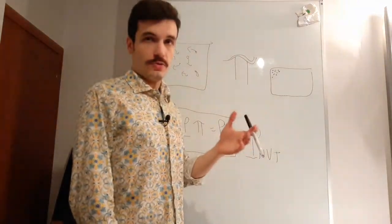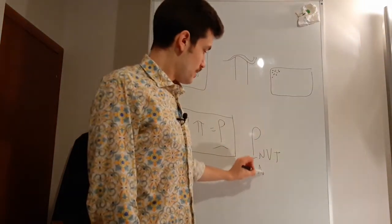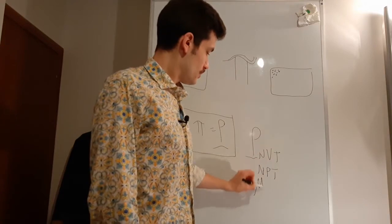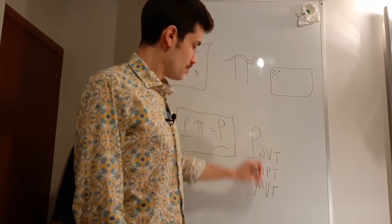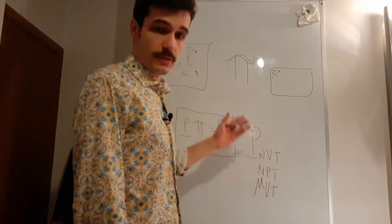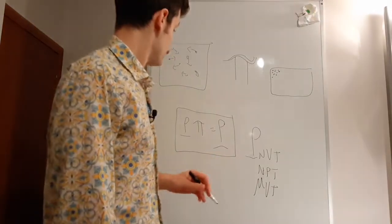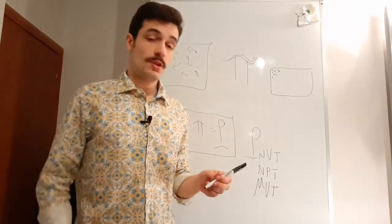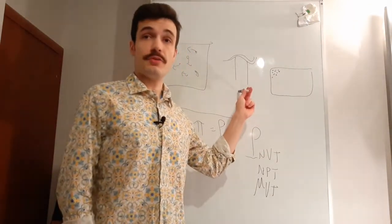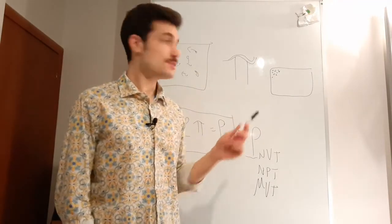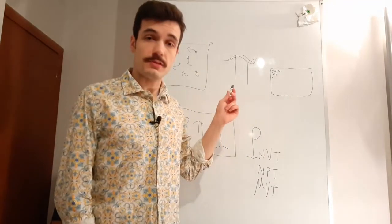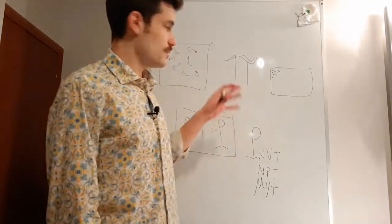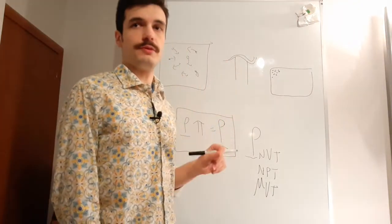It can also be done with the NPT ensemble — there is no real limit, any ensemble you like. There is only one problem: we have no idea how this matrix is made. What's the form of this matrix? We don't know it. It's a huge matrix and we absolutely don't know it.